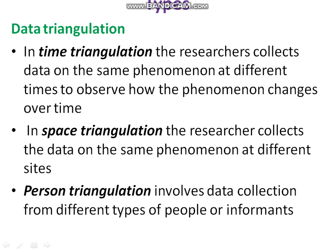The first type is data triangulation, which has three sub-types. The first is time triangulation, where the researcher collects data on the same phenomenon at different times in order to observe how the phenomenon changes over time.